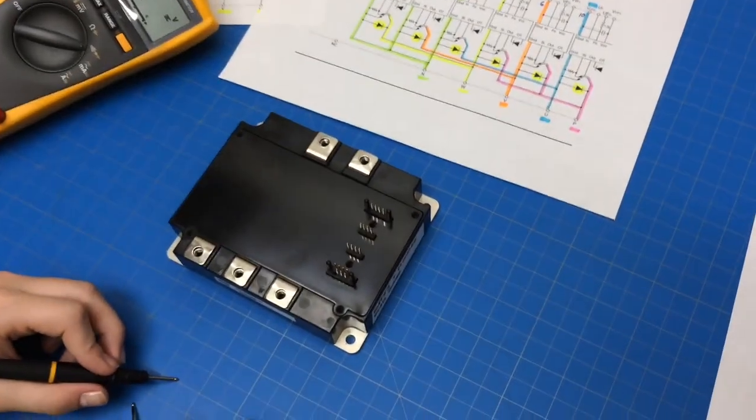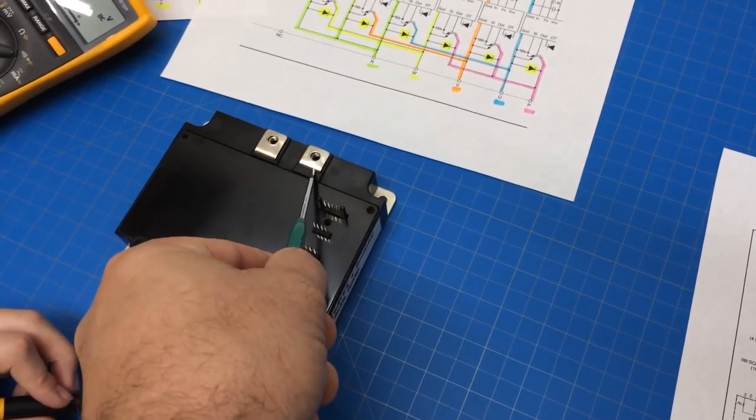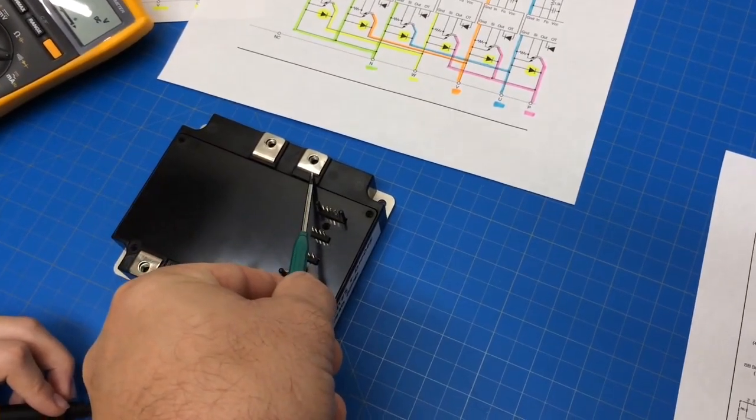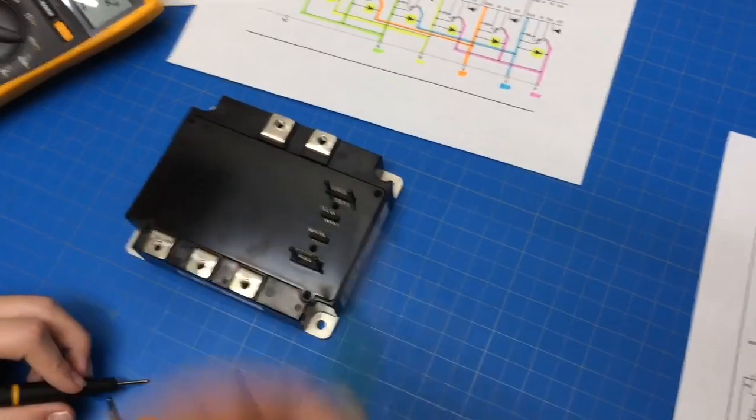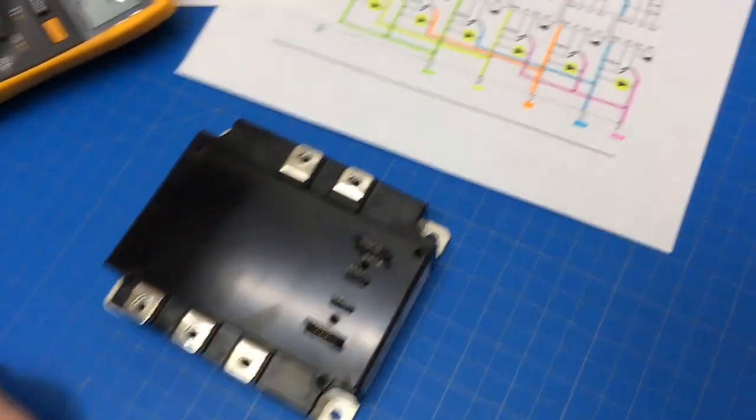Okay, so now if we do black on N, and then red on each one of the phases, we should read OL. And we do. So the shortcut is you just put one here, here, here, and here. Swap. And then switch over to here. Put one meter lead here, here, here, and here, and then swap. You read OL one way, a voltage drop the other way, they're good. That's the easy part.